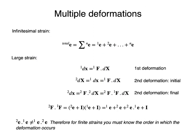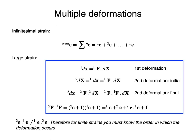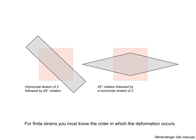Finally, let's consider multiple deformations. If the strains are infinitesimal, the total strain is the sum of the different strain events. However, if the strains are large, the total strain is no longer the sum — there is an additional term which is not commutative. Therefore, for finite strains we must know the order in which the deformation occurs. A horizontal stretch of 2 followed by a 45-degree rotation is not the same as a 45-degree rotation followed by a horizontal stretch of 2.